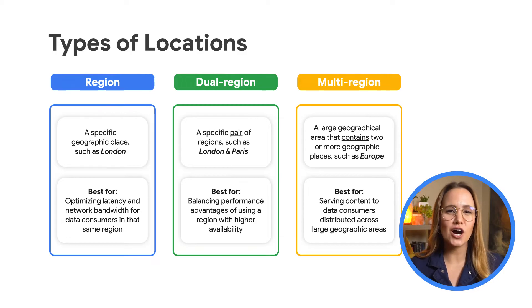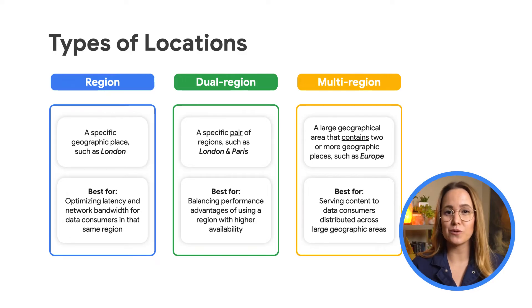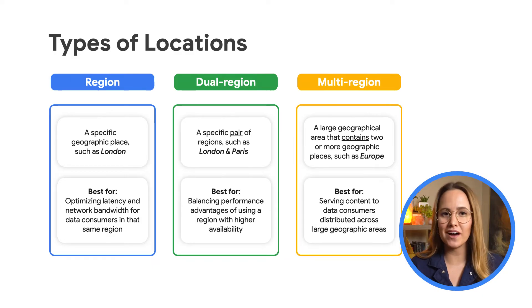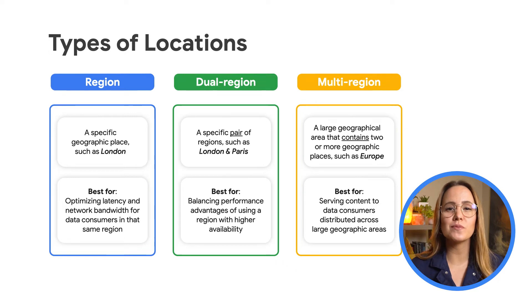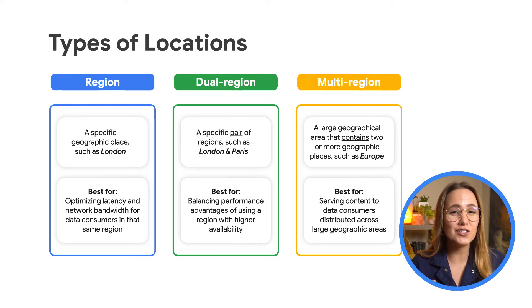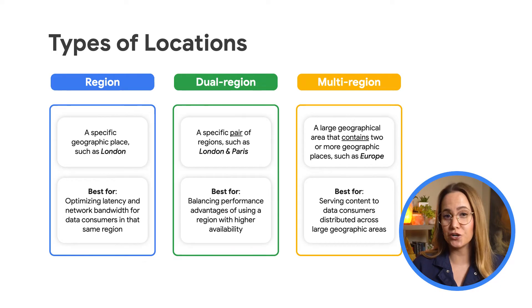Use a region to help optimize latency and network bandwidth for data consumers, such as analytics pipelines that are grouped in the same region. Use a dual region when you want similar performance advantages as regions, but you also want the higher availability that comes with being geo-redundant.